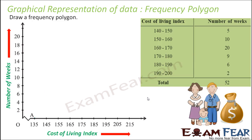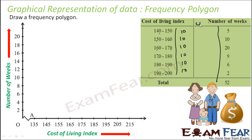Let's take one example — we will draw a frequency polygon. The class intervals are: 140–150, 150–160, 160–170, 170–180, 180–190, 190–200. The class size is all 10, so we don't have to find a new frequency. We need to find the class marks: 140+150÷2 = 145; 150+160÷2 = 155; 160+170÷2 = 165; 170+180÷2 = 175; 180+190÷2 = 185; 190+200÷2 = 195. These are the class marks.